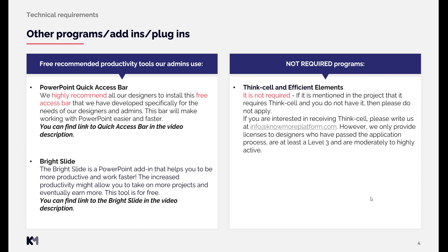For the not required programs, we have ThinkCell and Efficient Elements. Usually the projects mention if this is needed, and if it is required and you do not have a ThinkCell license, please do not apply. If you are interested in receiving one, you can write to us at info@nomoreplatform.com. However, we can only provide a license to designers who have fully passed the application process and are at least level 3 with high activity on our platform.